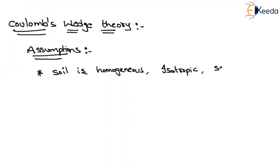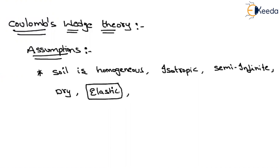The soil is also assumed to be semi-infinite. He considered dry soil and the soil is in an elastic condition. Remember, in Rankine's it is under plastic condition. It is also applicable for cohesionless soils — Rankine's is also applicable for cohesionless soils, homogeneous, isotropic, and semi-infinite. The key difference is that in Coulomb's wedge theory, the soil is considered in elastic state, but Rankine's considers it in a plastic state.